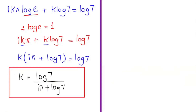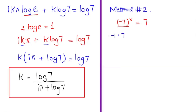Now our aim is to find the value of k. Since (iπ plus log 7) is multiplying, it will go to the other side as division. So k equals log of 7 over (iπ plus log of 7). This is our k value found using Euler's identity. Now we are going to solve the same expression using a second method. The expression is minus 7 to the power of k equals 7.